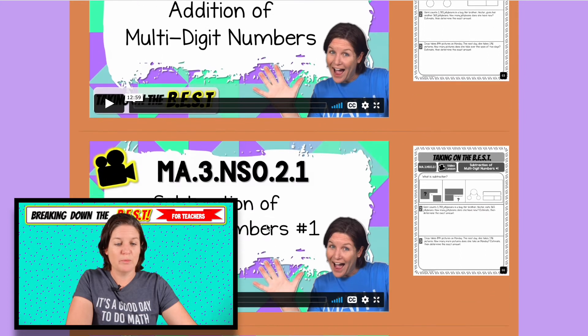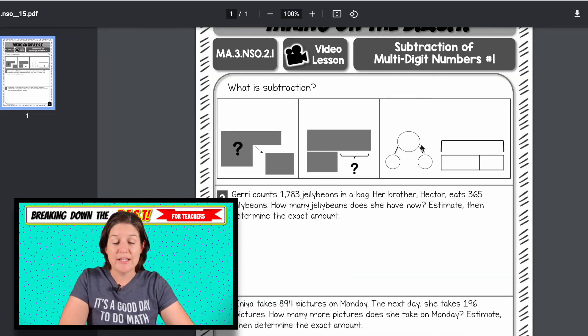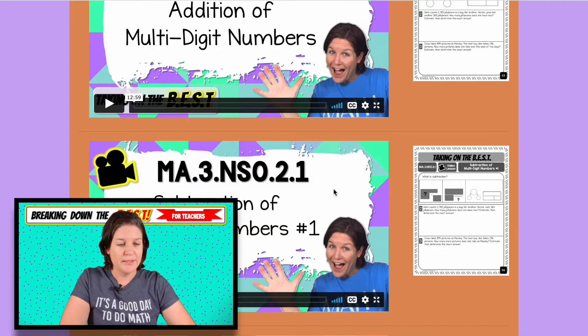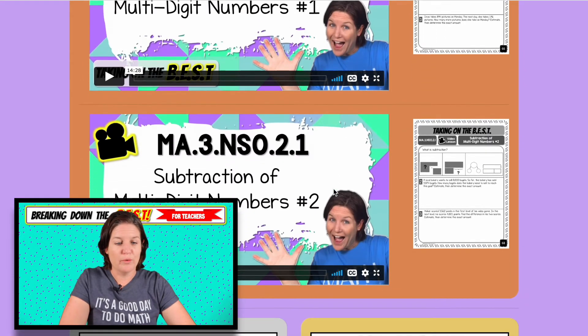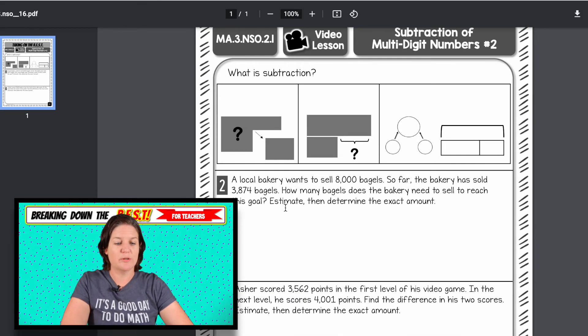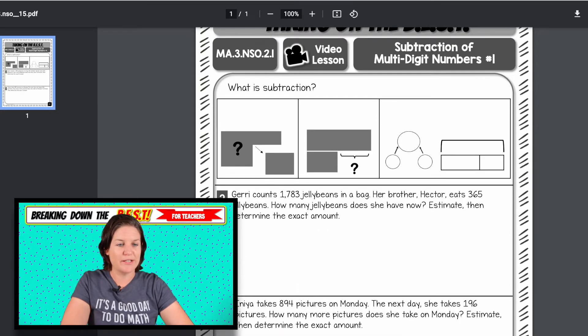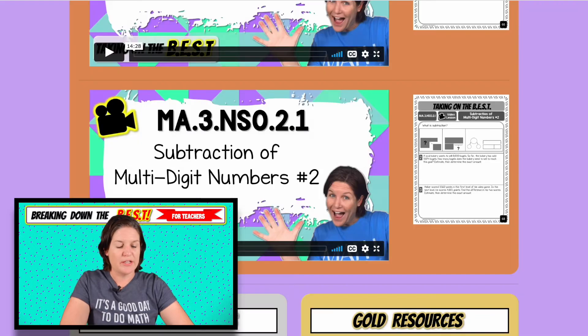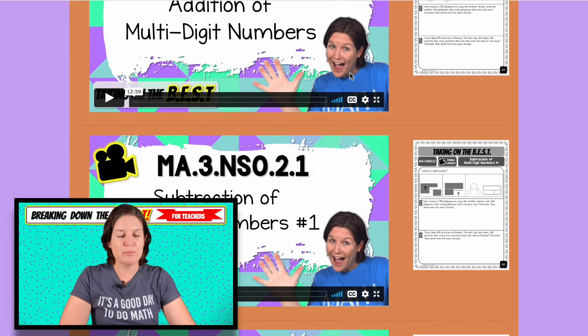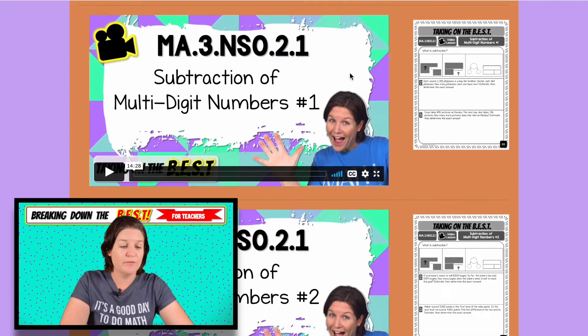Same thing with subtraction. There are three different scenarios that we break down in this video lesson. There's actually two lessons on subtraction. So if you need a quick review on what those are, feel free to watch those video lessons. And again, we go over the model. We draw a model for it. We estimate, and then we determine the exact amount with these video lessons. So it is applying that estimation rounding skill as well. Okay. So that's your bronze. You got three videos there and three printable pages that go along with the videos.